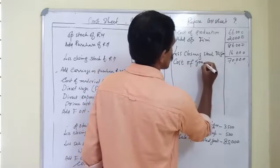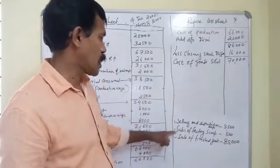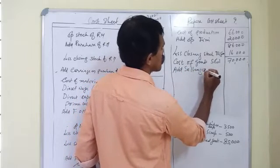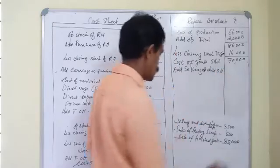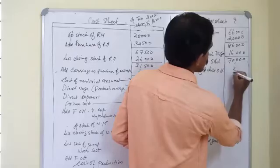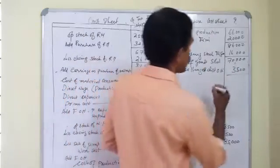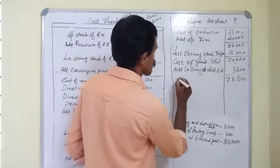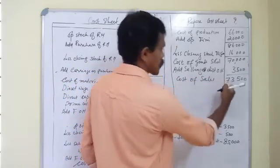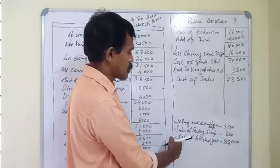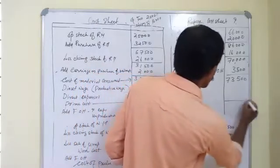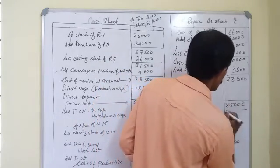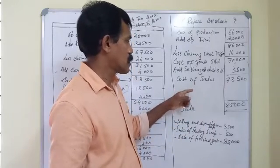To this cost of goods sold we add our selling and distribution expenses, which are 3,500. The total comes to 73,500 — that is our cost of sales. Our sale is 85,000.